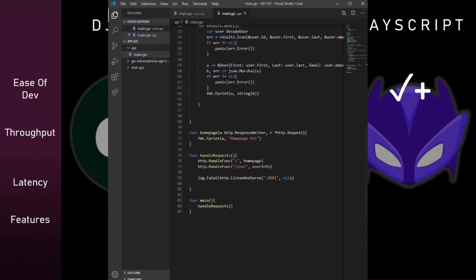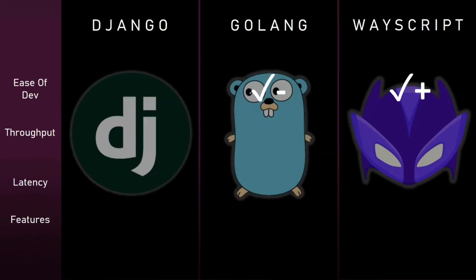In my Golang code, I just had a handle request function, and then based off the request and the URL, I'd route to different functions to display different information on the page. This wasn't that bad, but you definitely need more knowledge of the Golang language and networking and ports. And then in last place, I put Django.